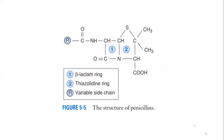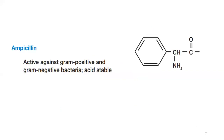First, you should know about the structure of the penicillins. It consists of two rings: the first one is the beta-lactam ring, and the second is the thiazolidine ring. The third component is the variable side chain. Basically, we make modifications to this variable side chain, and by doing so we overcome the resistance.